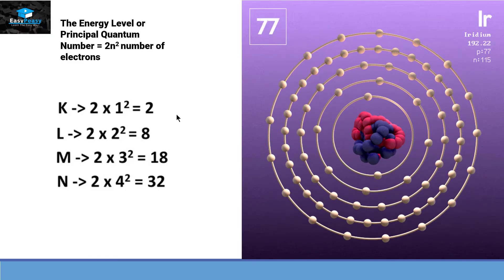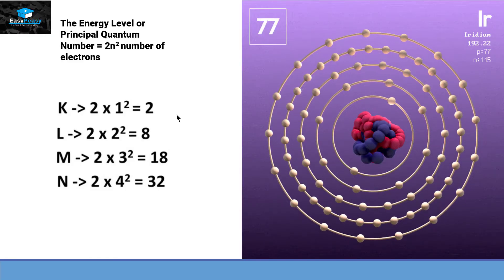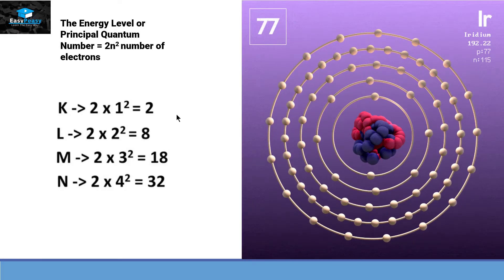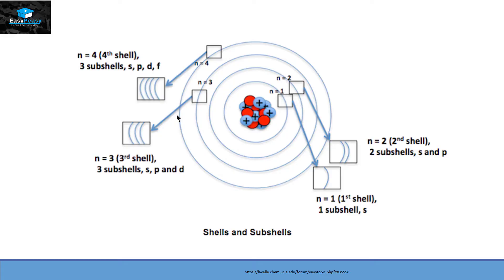Shells or energy levels are not as simple as they appear — they can further divide into subshells. The first shell has one subshell: the S subshell. The second shell has two subshells: S and P. The third shell has three subshells: S, P and D. The fourth shell has four subshells: S, P, D and F.